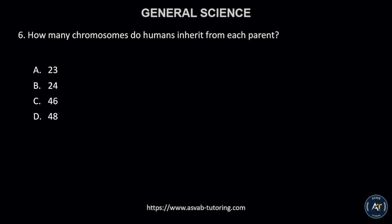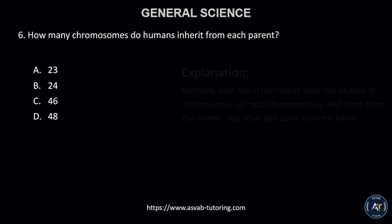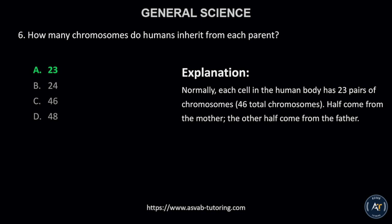Number 6. How many chromosomes do humans inherit from each parent? A. 23, B. 24, C. 46, or D. 48? The correct answer is letter A, 23. This is because normally each cell in the human body has 23 pairs of chromosomes, 46 total chromosomes. Half come from the mother, the other half come from the father.